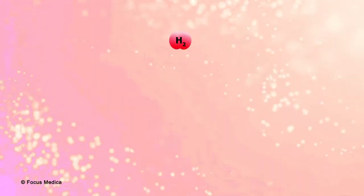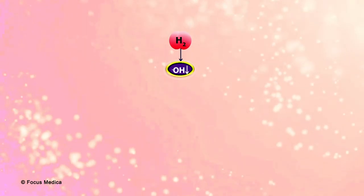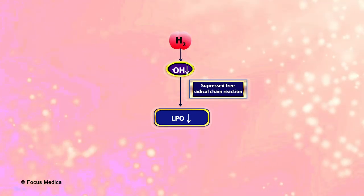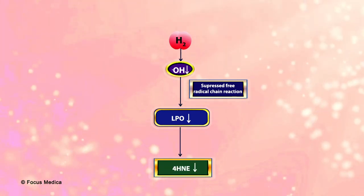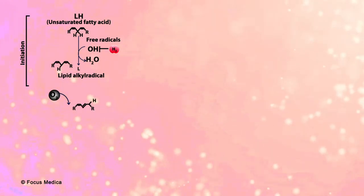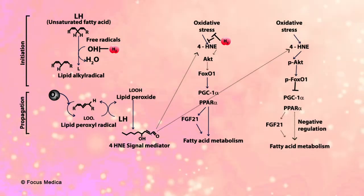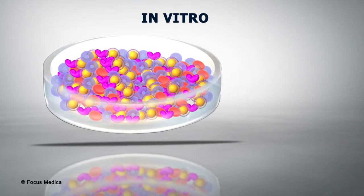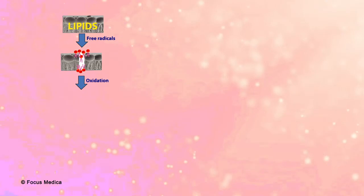In the subsequent pathway, H2 suppresses a free radical chain reaction, leading to decreases in lipid peroxide and its end products, including 4-hydroxy-2-nonenal (4-HNE), derived from the peroxides. 4-HNE functions as a mediator that upregulates multiple functional peroxisome proliferator-activated receptor gamma coactivator 1-alpha (PGC1-alpha). As another direct target, H2 intervenes in the free radical chain reaction to modify oxidized phospholipids, which may act as an antagonist of Ca2+ channels.